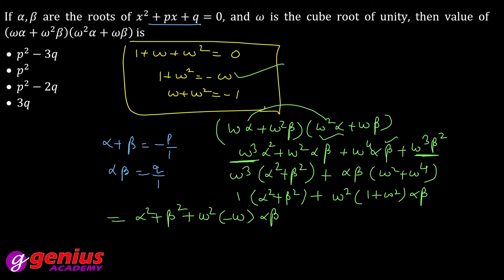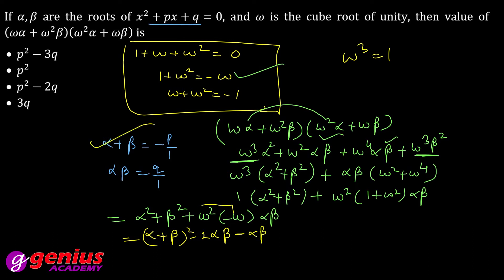α² + β² = (α + β)² − 2αβ. Substituting: (α + β)² − 2αβ − αβ = (α + β)² − 3αβ. α + β = p (given), αβ = q (product of roots), toh final answer = p² − 3q.